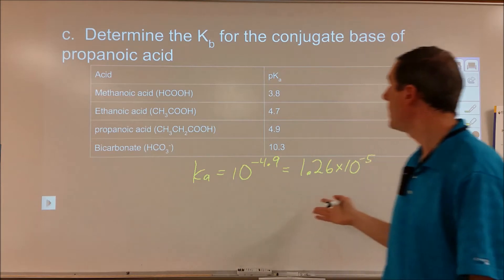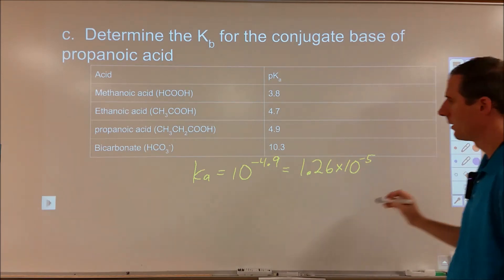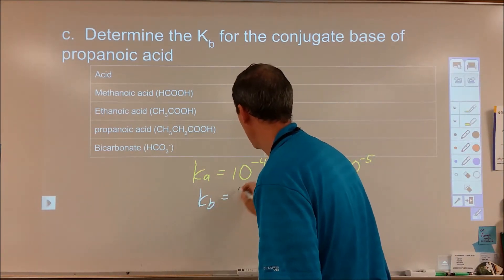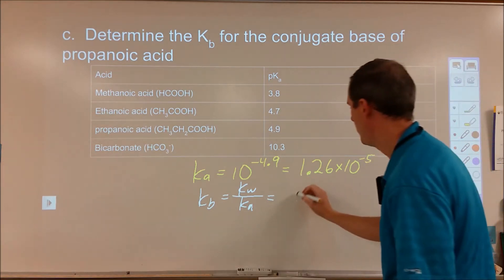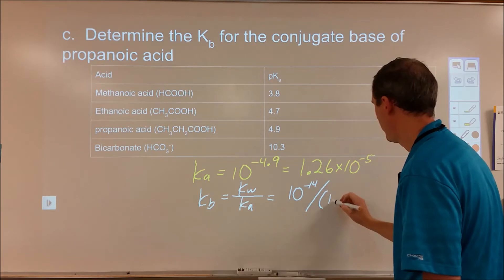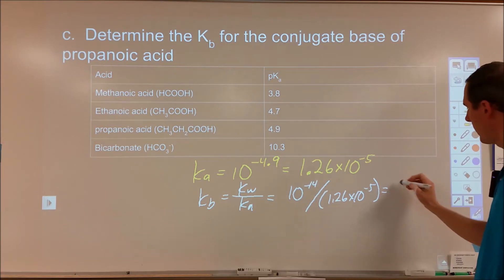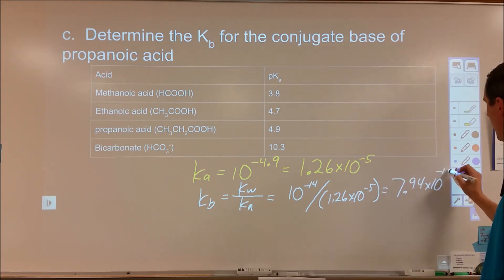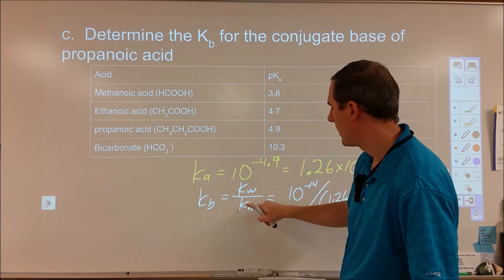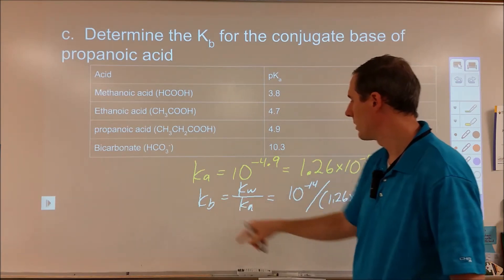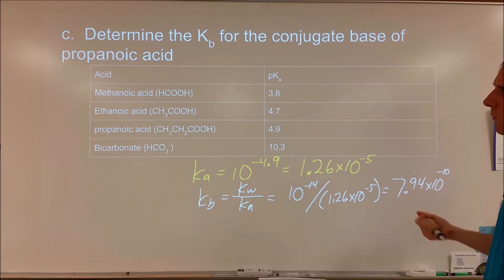It also asks for the Kb of the conjugate base of propanoic acid, which would be propanoate. For our Kb, we know that it equals Kw for water divided by Ka of the acid. So we take 10 to the negative 14 and divide it by 1.26 times 10 to the negative 5, which comes out to be 7.94 times 10 to the negative 10. There's a reciprocity here — the larger the Ka, the smaller the Kb — so propanoate is a really weak base.